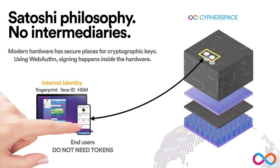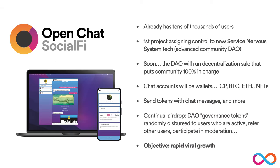When you interact with a service running on the Internet Computer, your session key will be signed inside that secure hardware. You can tell your device to do that using the fingerprint sensor on your laptop, Face ID on your phone, or an HSM device like a Ledger wallet or a YubiKey. This gets rid of one of the main barriers to entry — the primary friction users experience when interacting with a blockchain service. They don't need tokens anymore, they don't need to manage keys or worry about somebody hacking their computer to steal them. They can just create an Internet Identity Anchor and assign a bunch of devices to it.